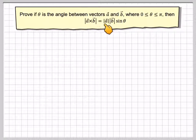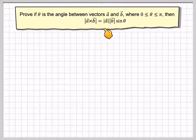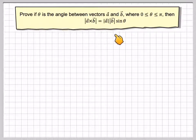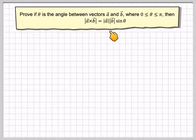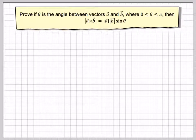Prove: if theta is the angle between vectors A and B, where theta is between 0 and pi, then the magnitude of the cross product is the same as the magnitude of A times the magnitude of B times the sine of theta. So what we're saying is the magnitude of the cross product will find the area of a parallelogram formed by two vectors in 3D space. This proof is quite long and quite complicated, and it's not expected in exam conditions.